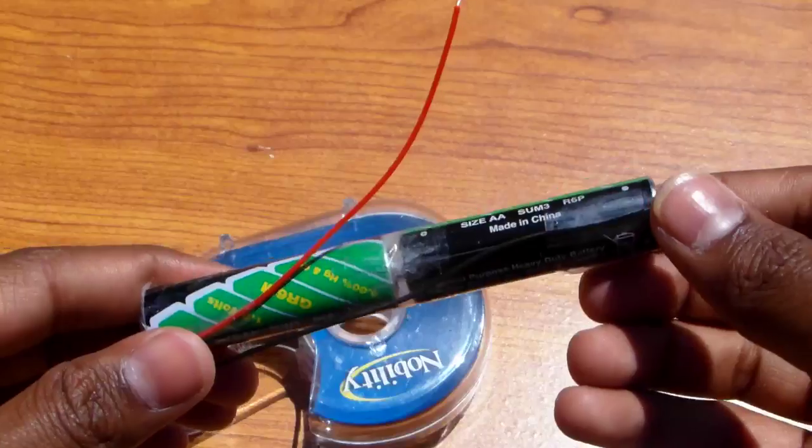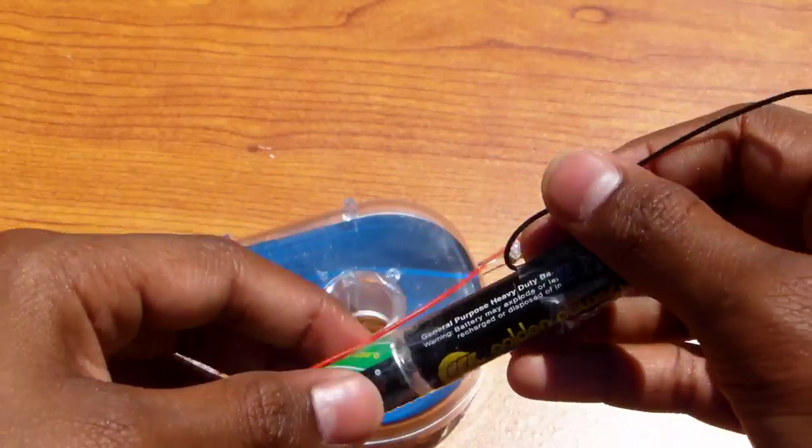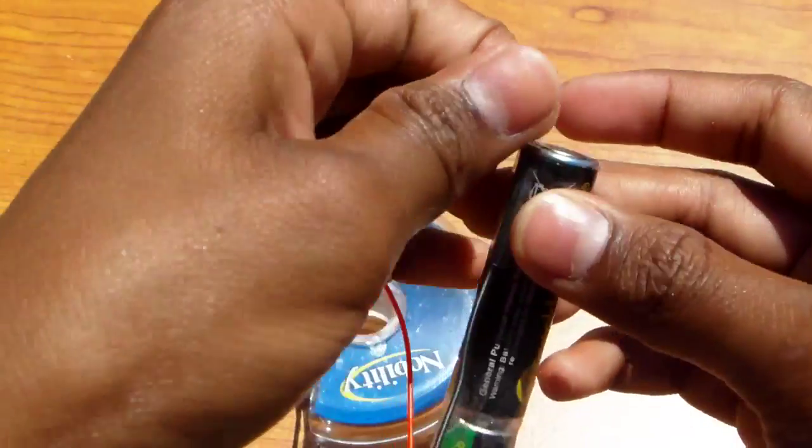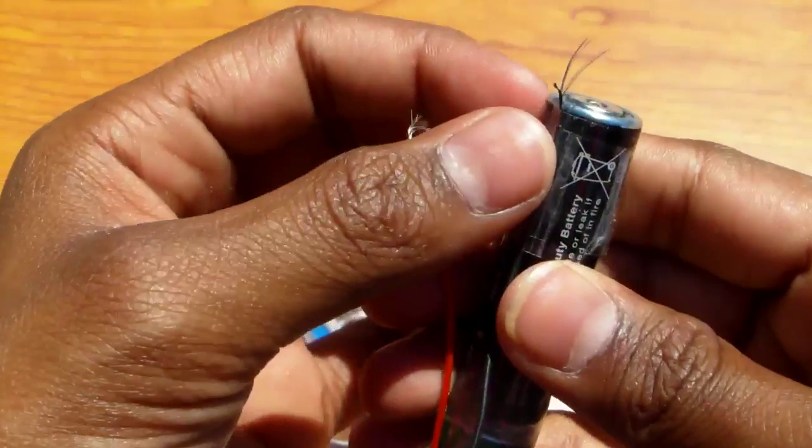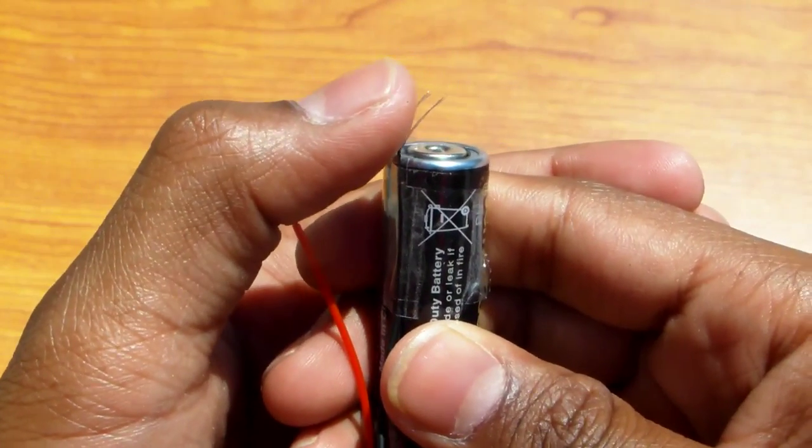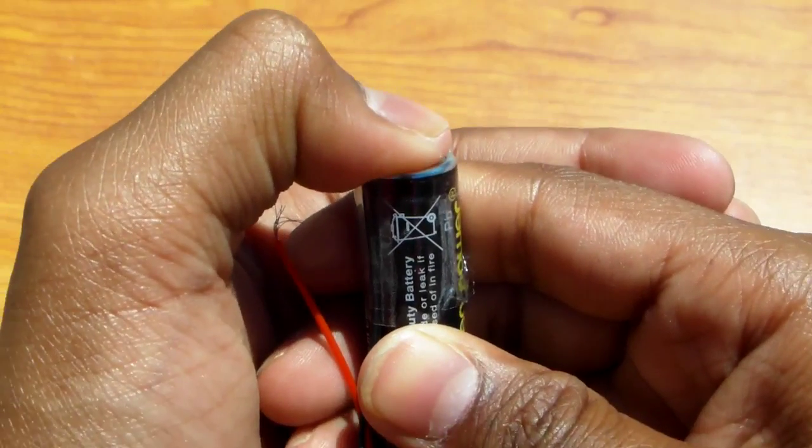So I just taped my wires and what I did to make it easier is I taped this end to the battery and this end, so it's like this, and then whenever you want it to light up just press it like that.